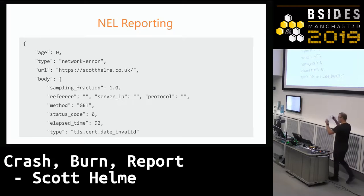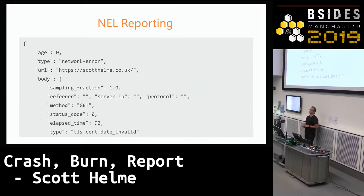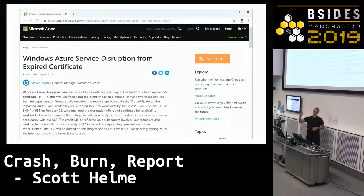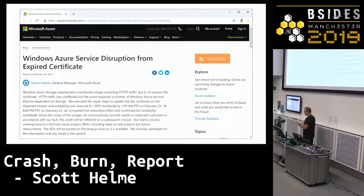So you can see that this user tried to navigate to my homepage but couldn't get there because my certificate was expired. As soon as they load that page and get that error message, completely transparently in the background, the browser fires that POST request. As long as I'm listening at the endpoint, I can know about it as soon as those reports start coming in.